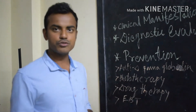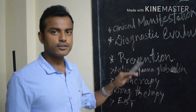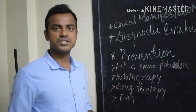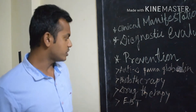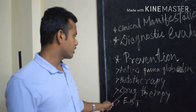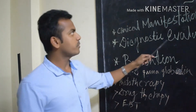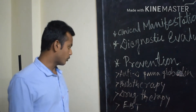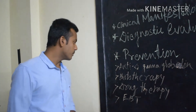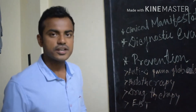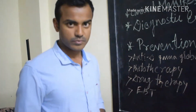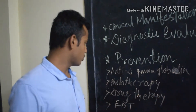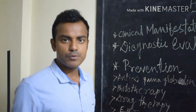In drug therapy, different drugs are used to prevent hemolytic disease or decrease bilirubin levels. Drugs like charcoal and agar are used to prevent hemolytic disease of the newborn.